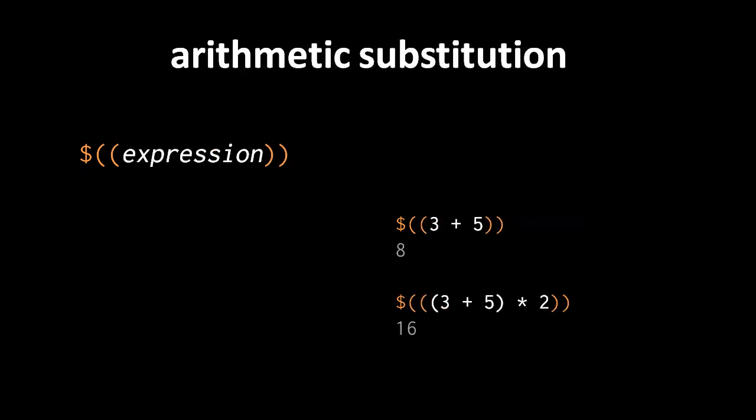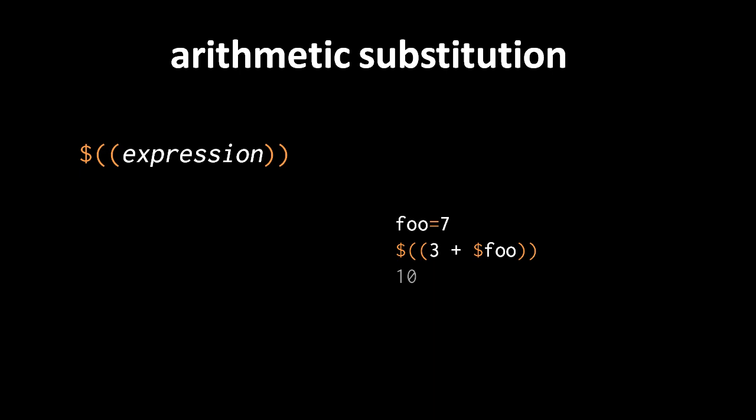Another useful substitution is arithmetic substitution, written with a dollar sign and double parentheses: '$((expression))'. The arithmetic expression is evaluated and the result is substituted as text. For example, '$((3+5))' returns '8', and '$((( 3+5)*2))' returns '16'. You can also use variable substitutions inside — for instance, if 'foo' is 7, then '$((foo+3))' returns '10'.